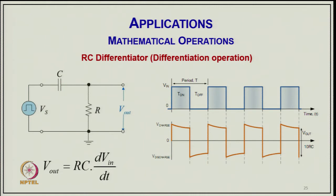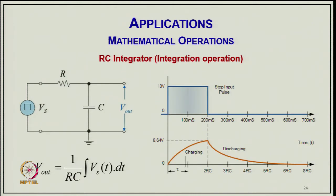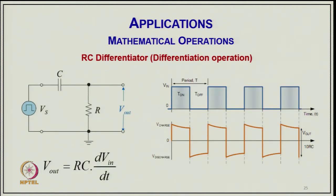The differentiator circuit produces an output voltage across the resistance equal to RC times dV_in/dt. Applying a pulse waveform with a particular duty cycle to this circuit produces a differentiated response waveform. The shape of the output can also be changed by changing the values of the capacitor and resistor — for example, a smaller capacitor will charge and discharge very quickly.